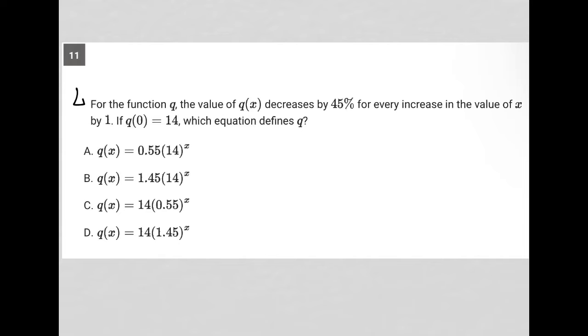So this question says for the function q, the value of q(x) decreases by 45% for every increase in the value of x by 1. So as x goes up by 1, q(x) goes down by 45%.